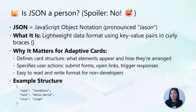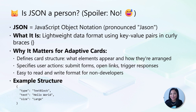Adaptive cards use JSON — and no, it's not a person. JSON stands for JavaScript Object Notation. It's a lightweight data format that uses key-value pairs and curly braces. For adaptive cards, JSON defines the card structure by specifying what elements appear and how they're arranged, while also determining user actions like submitting forms or opening links. The beauty of JSON is that it's easy to read and write, making it accessible even for non-developers who want to create interactive card experiences.